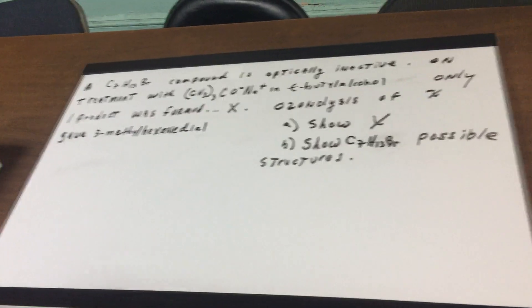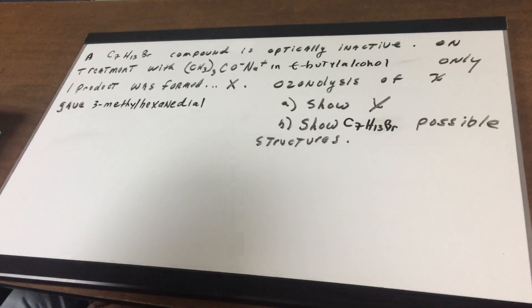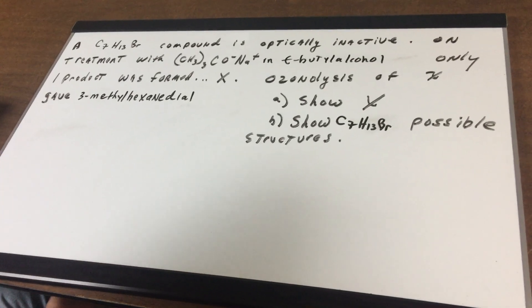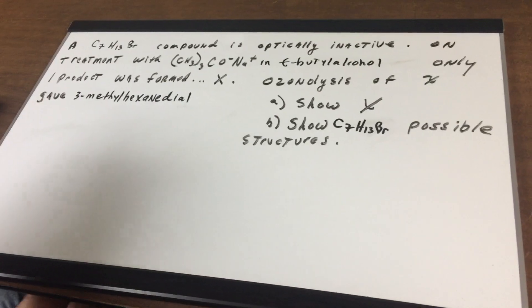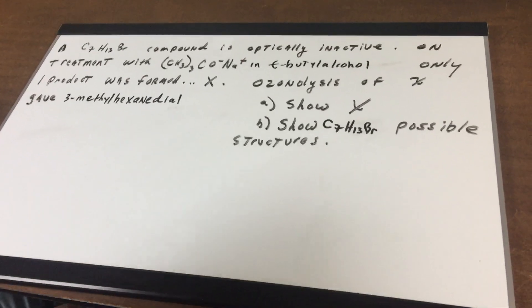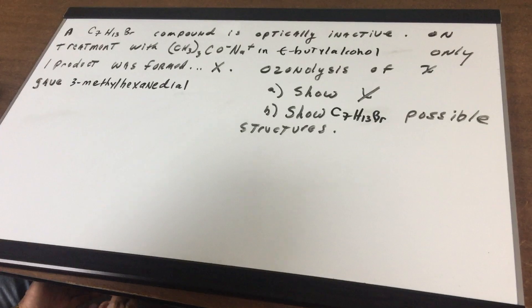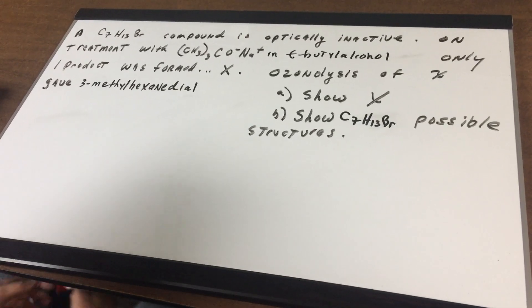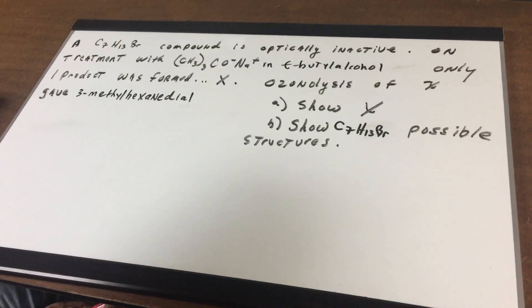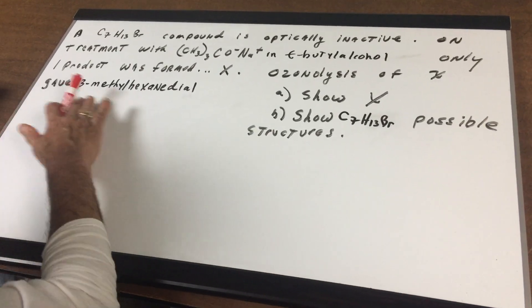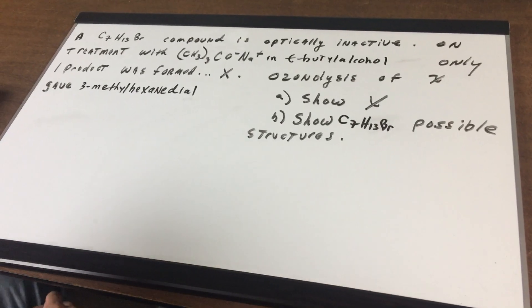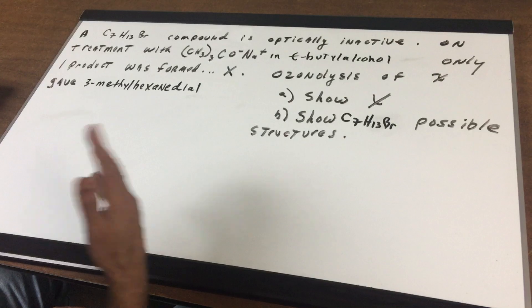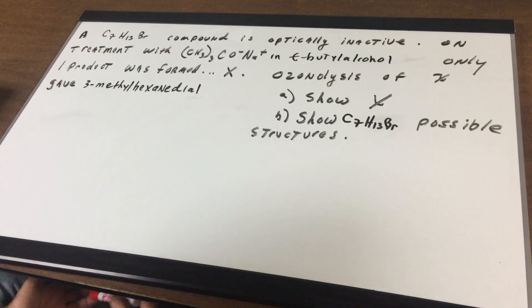It says here that we have a compound of C7H13Br and it is optically inactive. On treatment with sodium t-butoxide and t-butyl alcohol only one product was formed and that would be X. And then I go on to say to you that ozonolysis gave 3-methylhexanediol as a product.